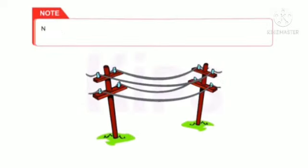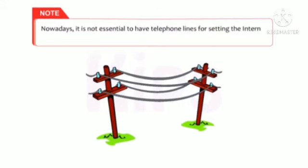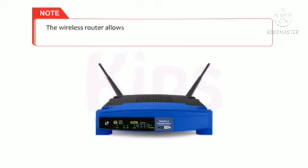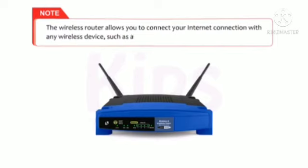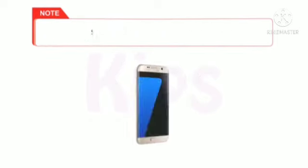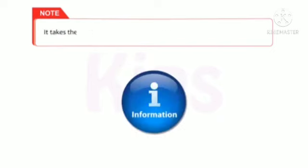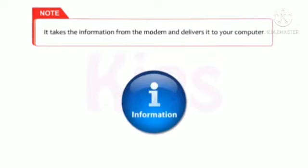Nowadays, it is not essential to have telephone lines for setting up an internet connection. It can be replaced by a wireless router connected to the modem. The wireless router allows you to connect your internet connection with any wireless device, such as a laptop, smartphone or iPad, within the home network. It takes the information from the modem and delivers it to your computer.